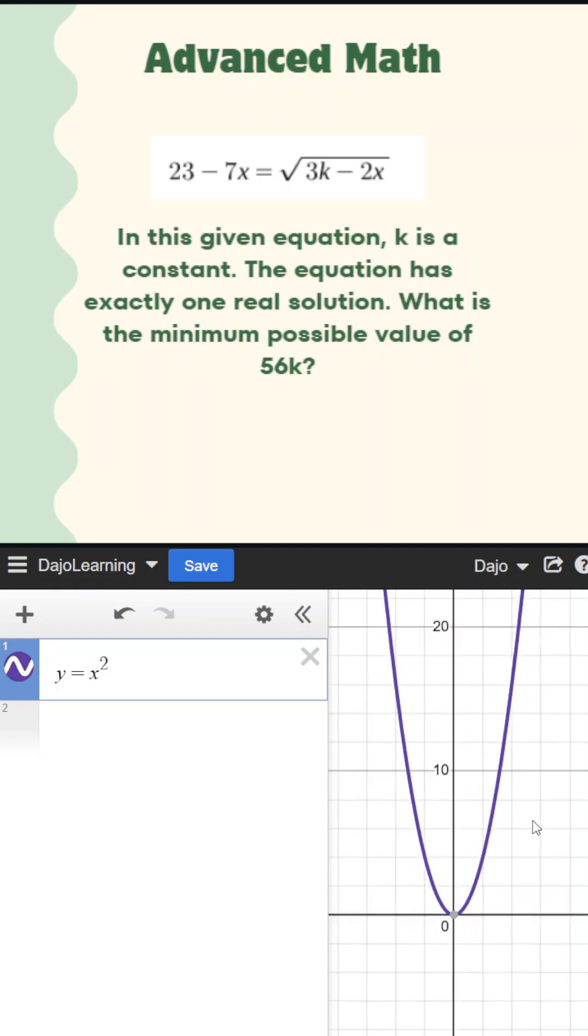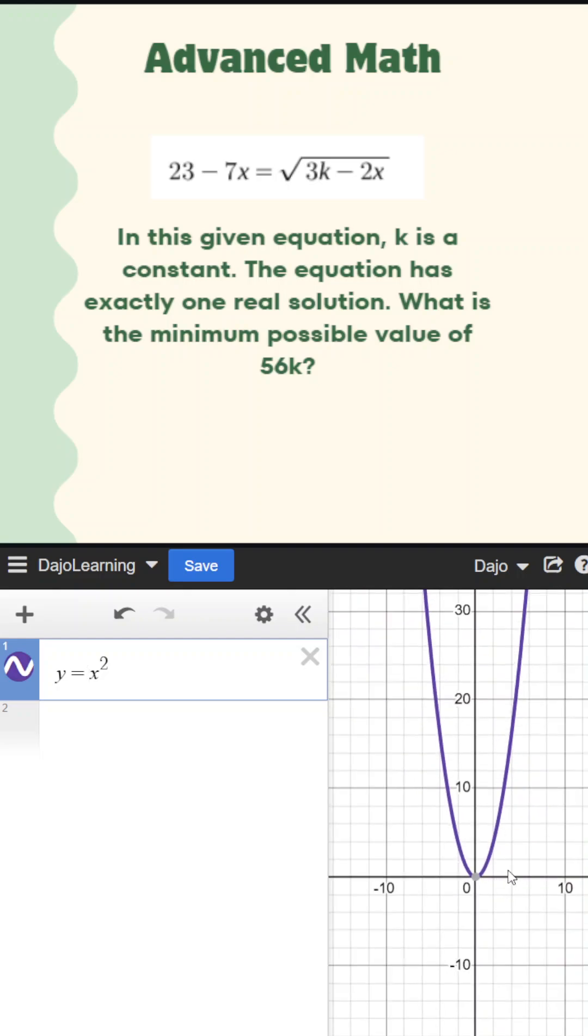When the vertex is the only point touching the x-axis, that's the only time we have one real solution, which means our y value of our vertex must be zero when dealing with one real solution.